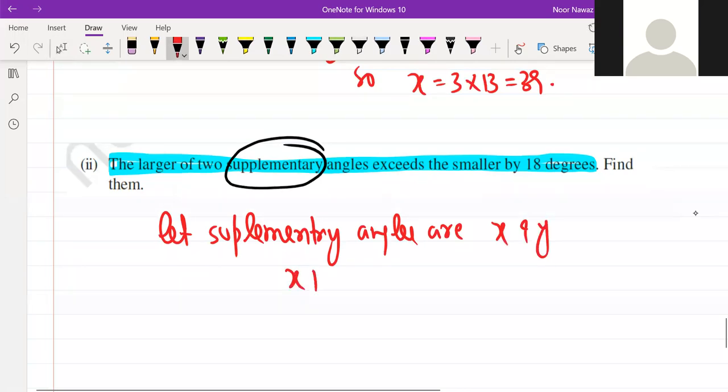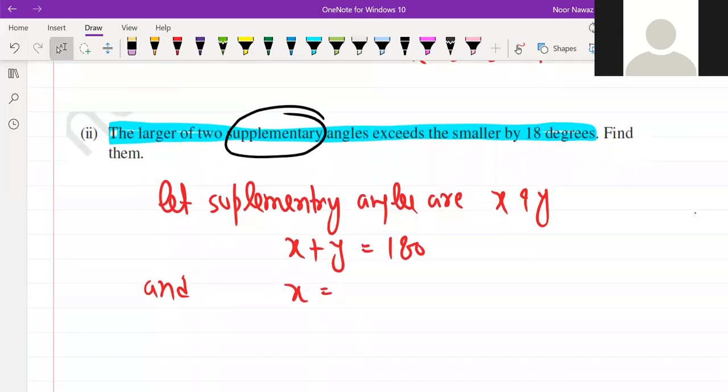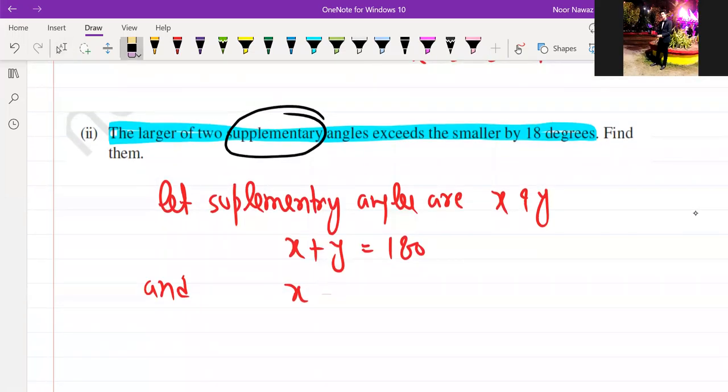So what is given? X plus Y equals 180. And X exceeds the smaller by 18 degrees, so X minus Y equals 18. Can we solve this?